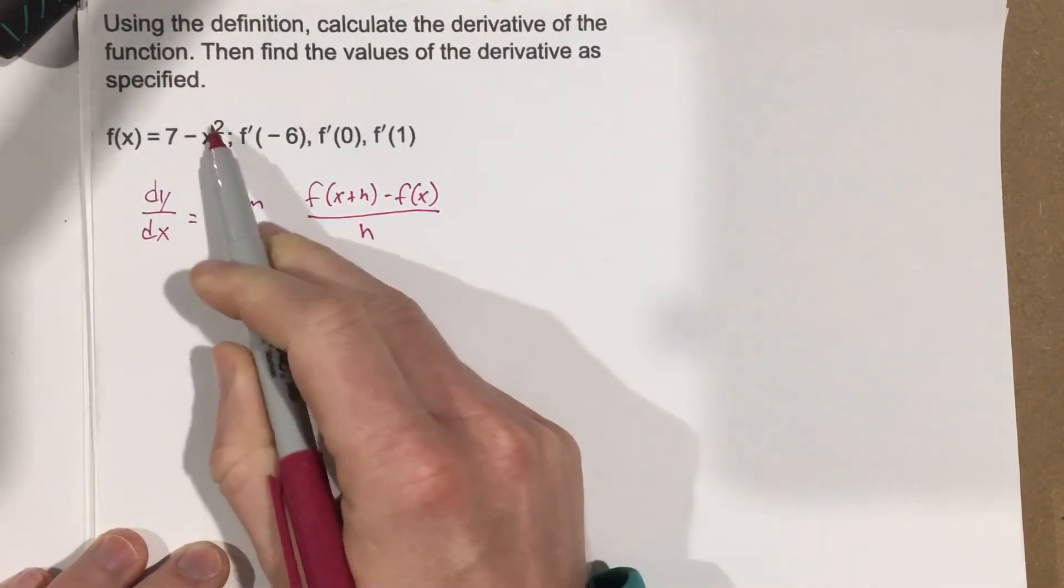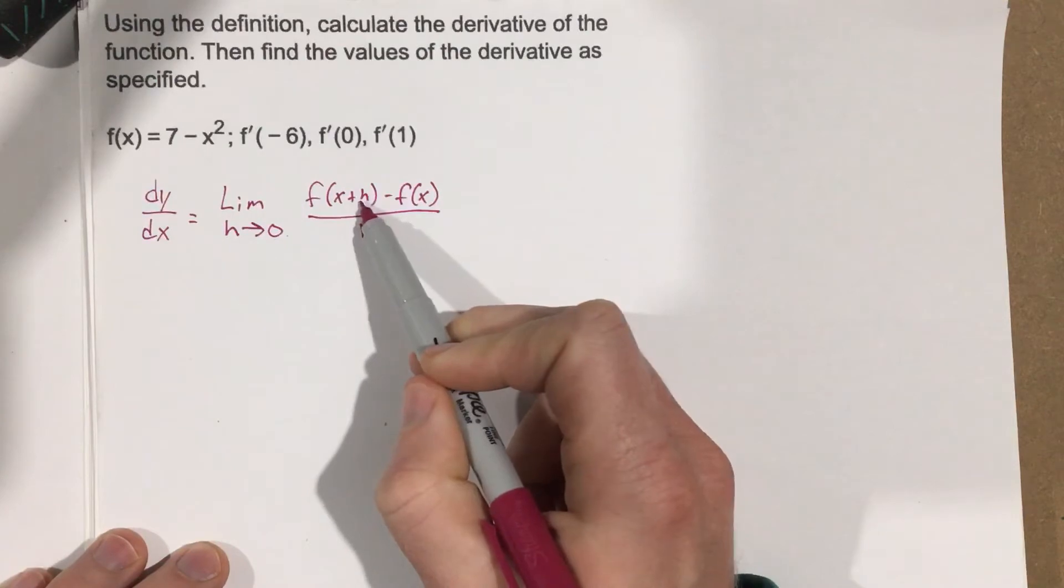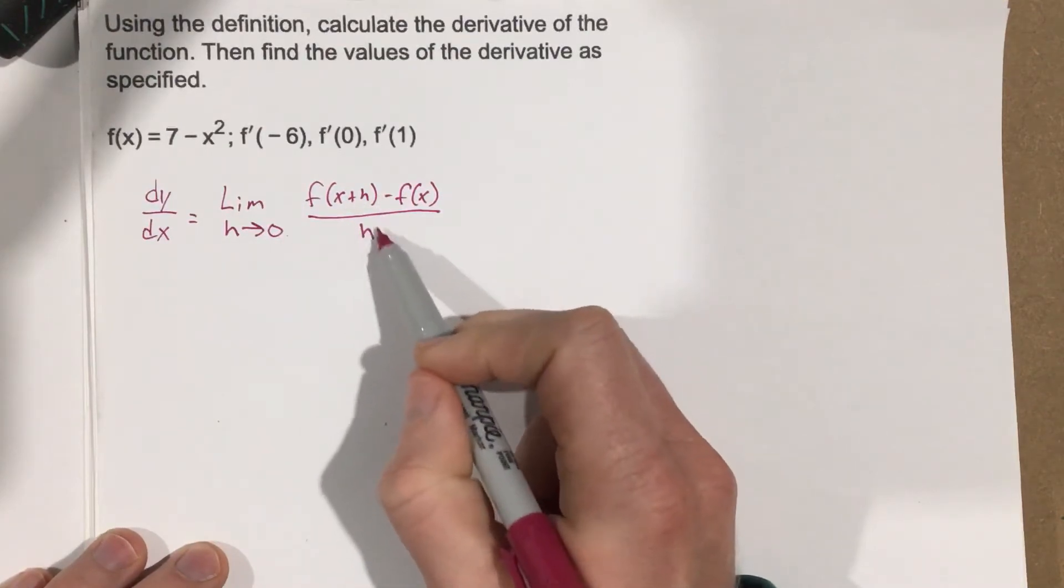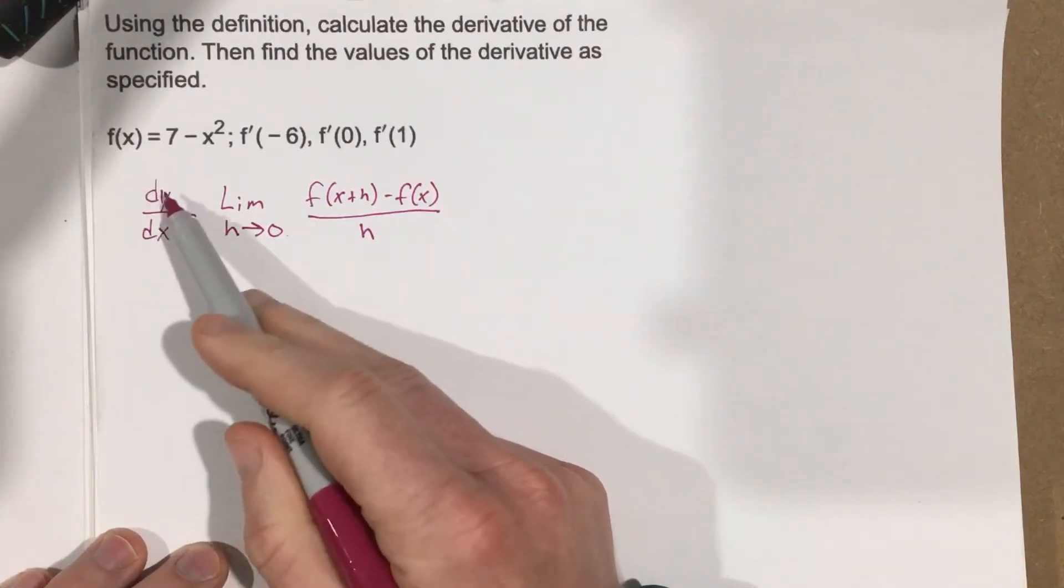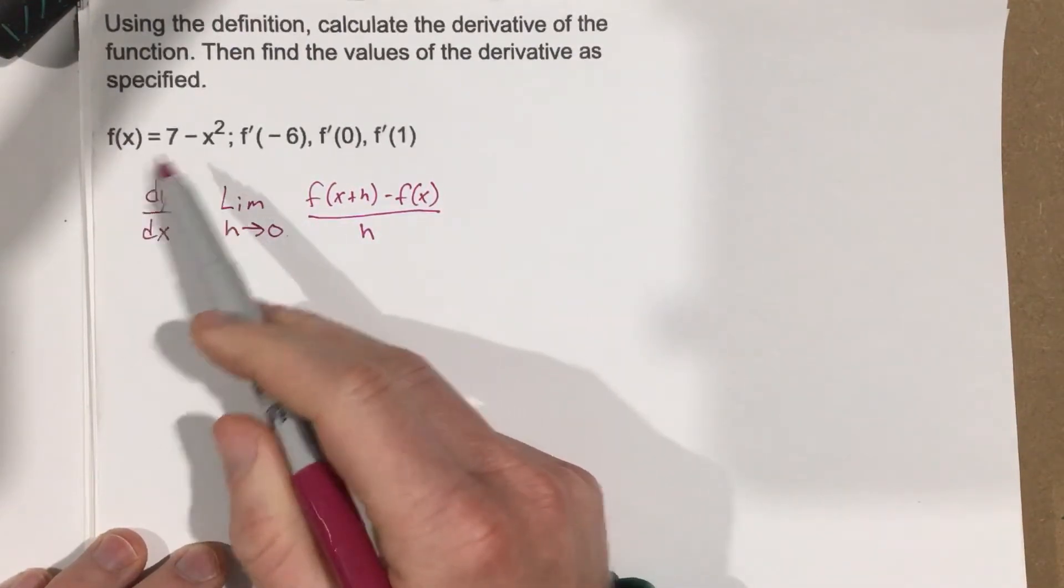We're going to take the function and plug in x plus h like we've done in previous sections. We're going to try and get rid of this h at the bottom. What we end up with, that's the derivative of this function.